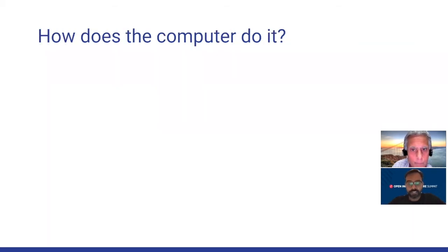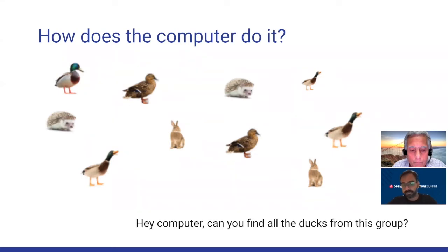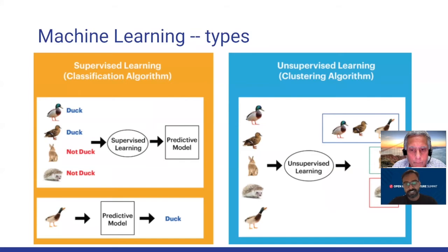So how does the computer do it? To illustrate this, I'm going to go through a simple example. Let's say we give the computer a bunch of pictures of animals and ask it to find all the ducks from this group. There are two ways to teach the computer this task. In machine learning, the two classes are supervised learning and unsupervised learning. For the purpose of this talk, we're only going to focus on supervised learning.